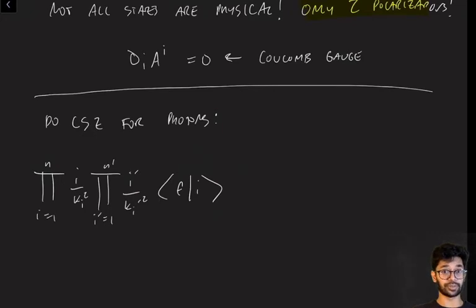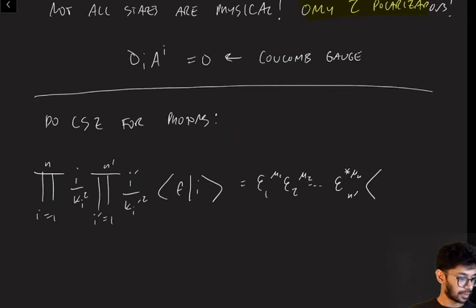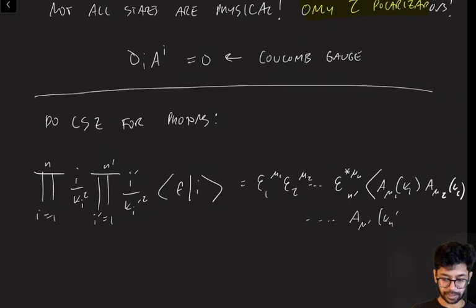The matrix element is given by a product over the n and n' states, with something like epsilon_μ1(k1), epsilon_μ2(k2), dot dot dot, all the way up to epsilon_μn, and then again you have epsilon_μ'1(k'1), epsilon_μ'2(k'2), dot dot dot, all the way up to the final epsilon_μ'n'.